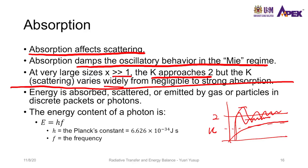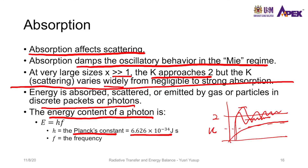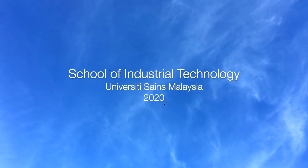Every time radiation interacts with matter, it is absorbed, scattered, or emitted by that matter — such as gas or particles — and it is in the form of discrete packets or photons. The energy content of a photon can be calculated using the equation E equals hf, where h is Planck's constant, 6.626 times 10 to the negative 34 joule-seconds, and f is the frequency.